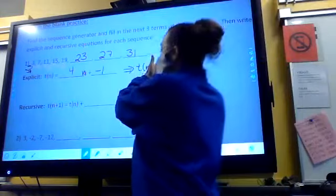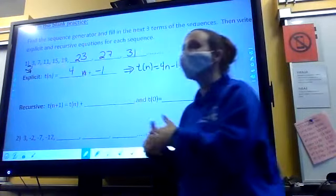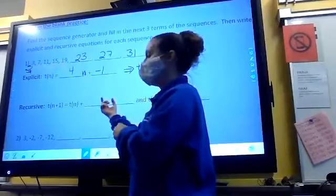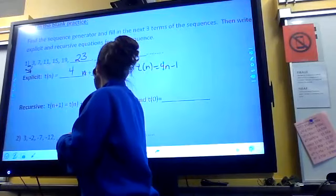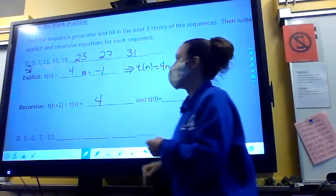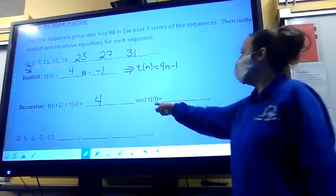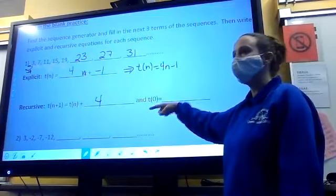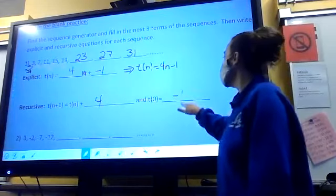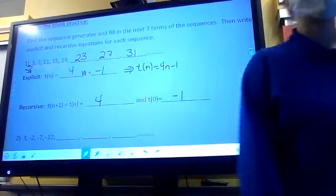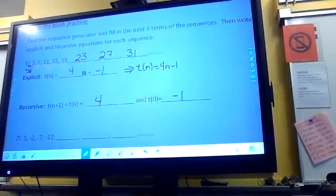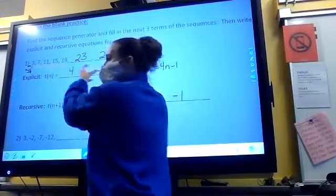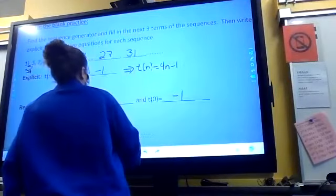But now you have to turn that into recursive. Your four and your negative one have to be somewhere in your recursive formula. And so here it is. The term I want equals the previous term plus four. That's where the four belongs. That's how we're building it. Remember, T of zero tells us that's the first, that's the zero point in our sequence or the zero term or the zero figure.